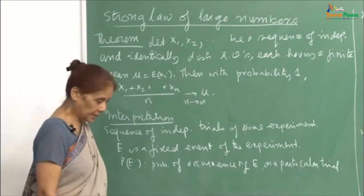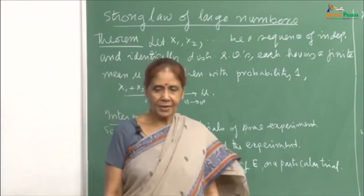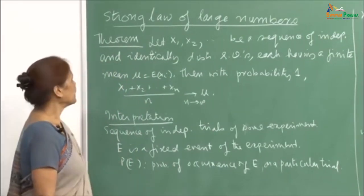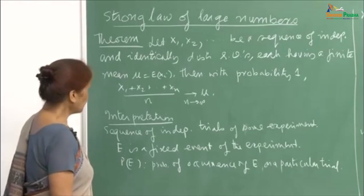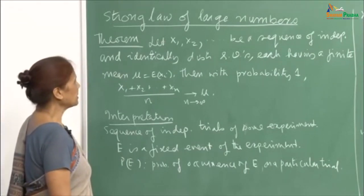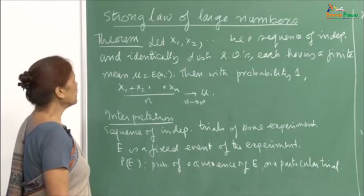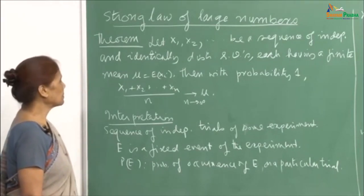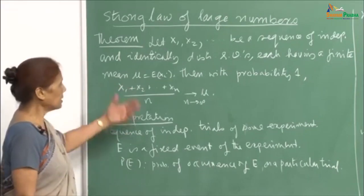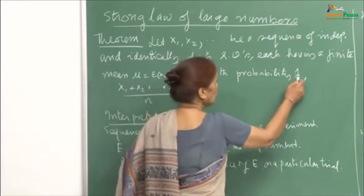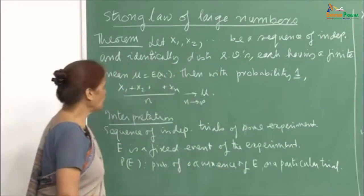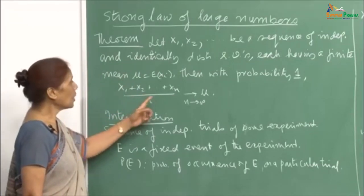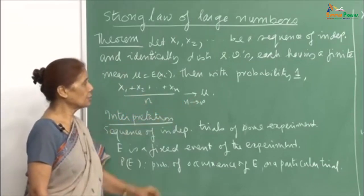Now I will talk about the strong law of large numbers, having already discussed the weak law. I will first state the theorem. The theorem says that if x_1, x_2, ..., x_n is a sequence of independent and identically distributed random variables, each having a finite mean mu equal to E[x_i], then with probability 1, the sample average (x_1 + x_2 + ... + x_n)/n will converge to mu as n goes to infinity.